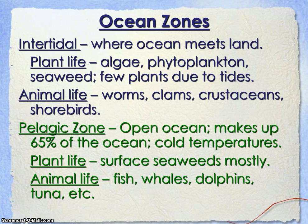Your pelagic zone is going to make up roughly about 65% of the ocean. Most of the ocean is made up of the pelagic zone — this is your open ocean area. Large fish and large mammals are going to be found here. You do still have photic processes going on, and your zooplankton and phytoplankton use that as a resource.